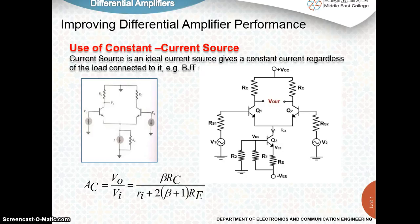Simply increasing the emitter resistance will cause some other problems, so we cannot use a high resistance at the emitter. We have to go for some alternative circuit to produce a high emitter resistance, and the alternative circuit we can use is a constant current source.